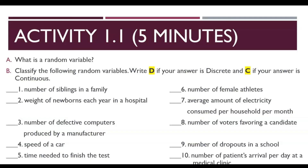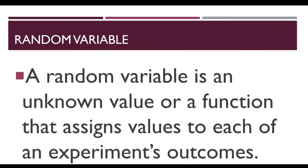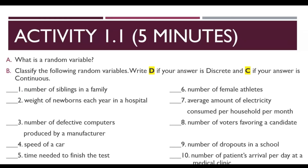Now let's answer the following activity. Letter A: What is a random variable? A random variable is an unknown value or a function that assigns values to each of an experiment's outcomes. Letter B: Classify the following random variables — write D if discrete and C if continuous. Number 1: Number of siblings in a family. You can count the number of siblings in a family, therefore the answer is D — discrete.